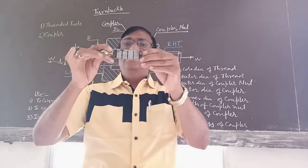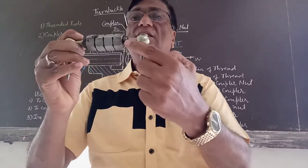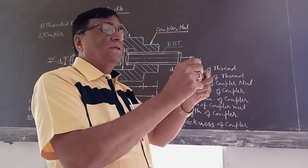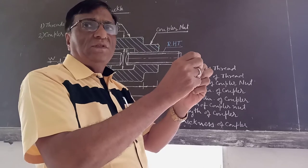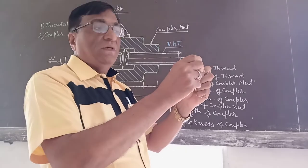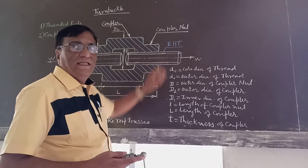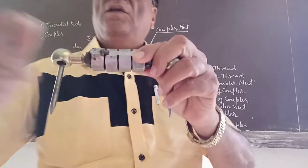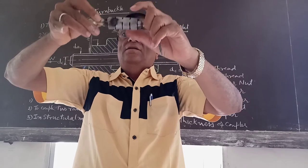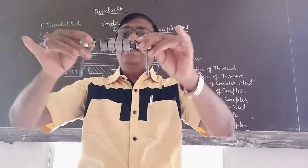Now, the clockwise rotation. This is the threaded rod, this is the threaded rod, and this is the coupler, and these are the threaded nuts. The clockwise rotation causes the two rods to come nearer together, and anti-clockwise rotation will cause the two rods to go away from each other, because the threads are opposite — left-hand threads on one side and right-hand threads on the other. Clockwise rotation causes the rods to come nearer together.